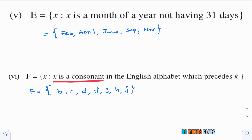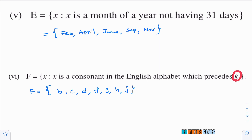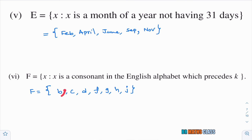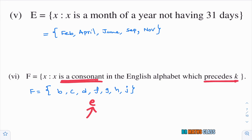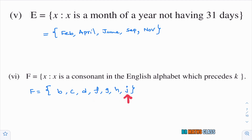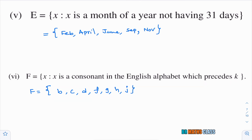Sixth bit: F = {x : x is a consonant in English alphabet which precedes K}. Before K, the consonants are B, C, D, F, G, H, J. Note: A, E, I are vowels, so they are excluded even though they come before K. In roster form: F = {B, C, D, F, G, H, J}.